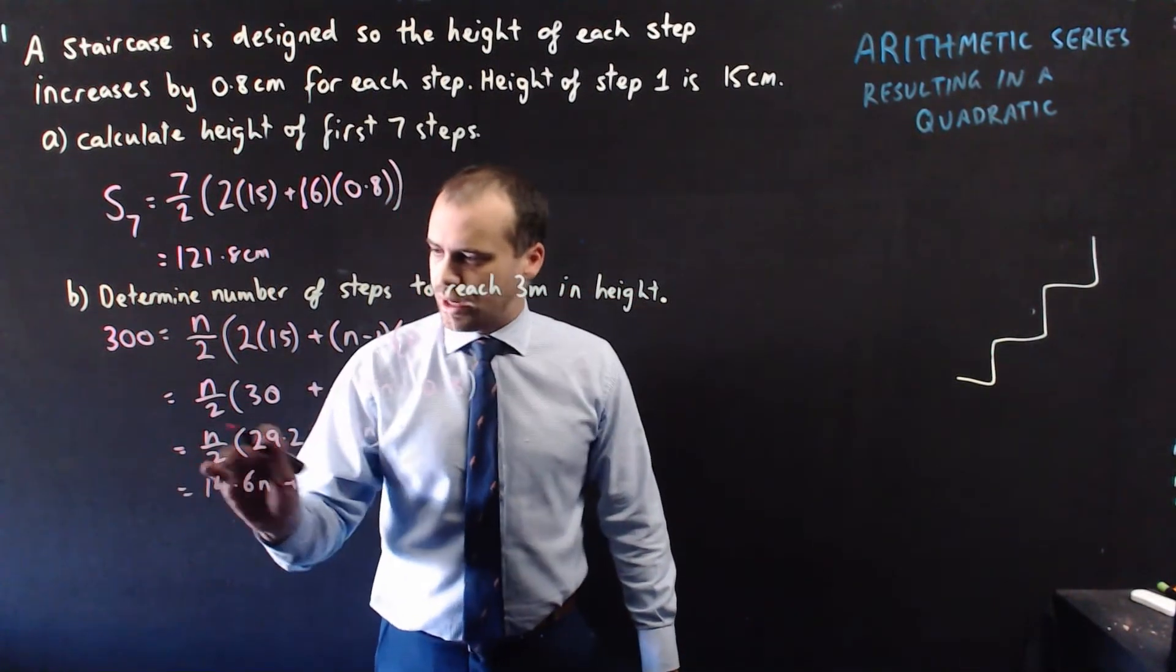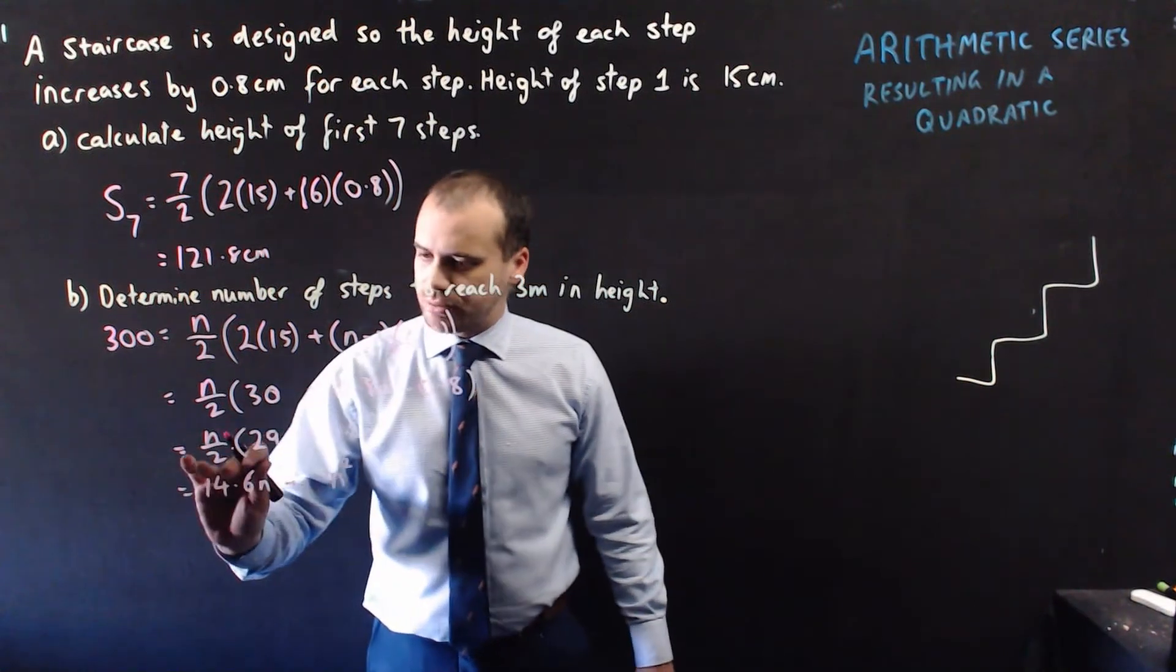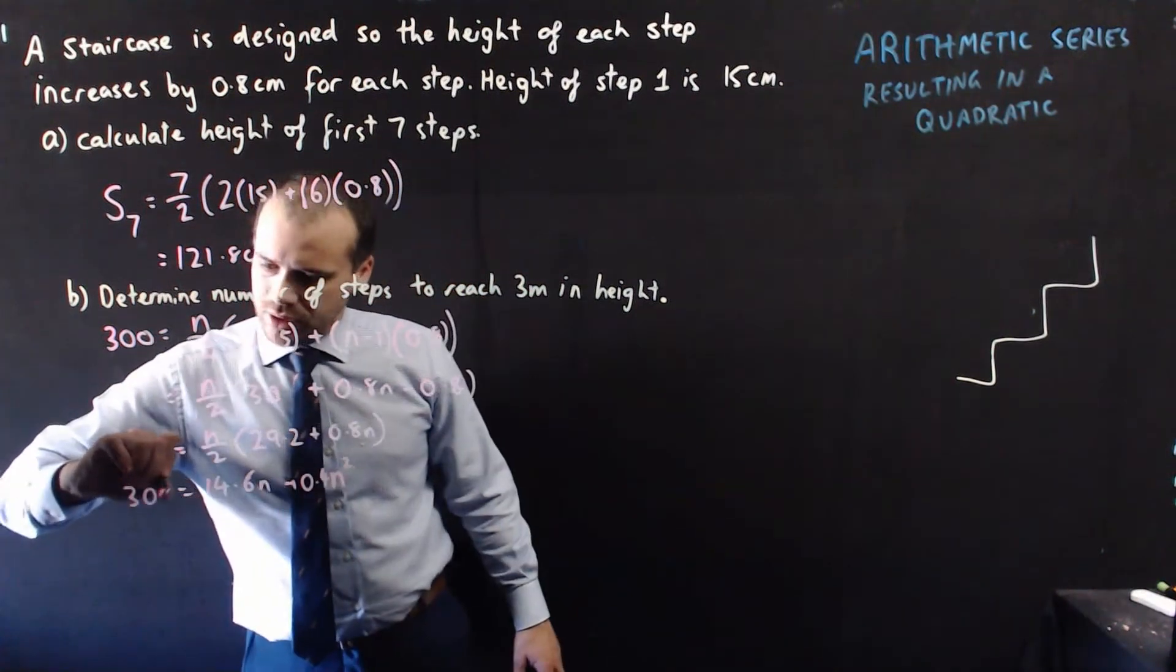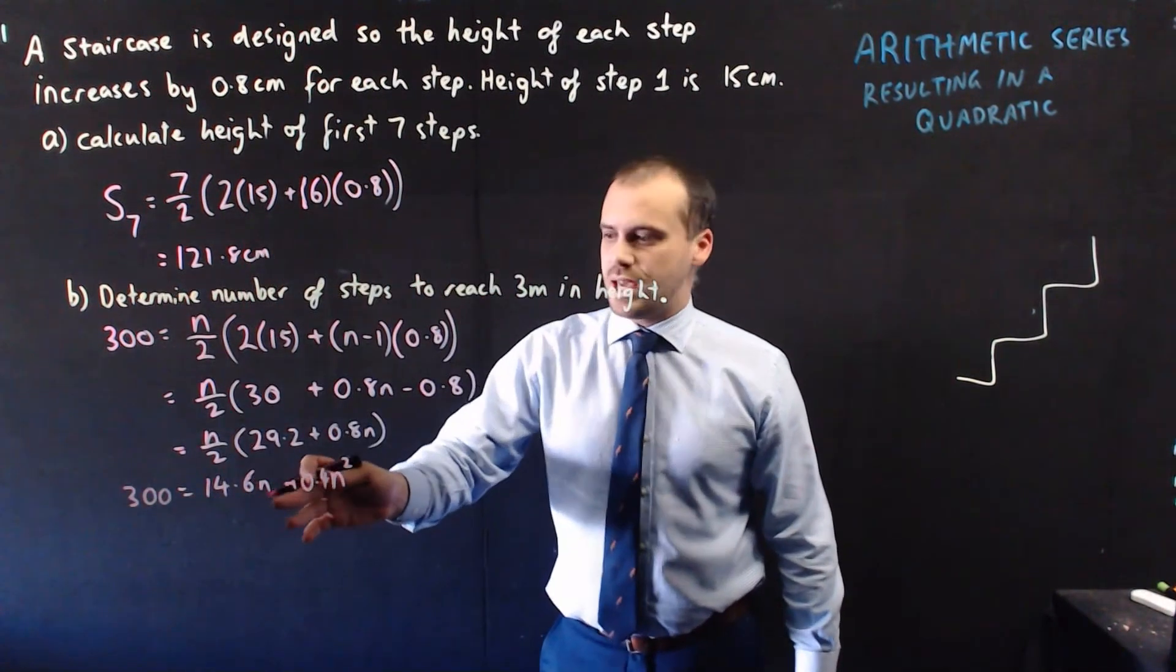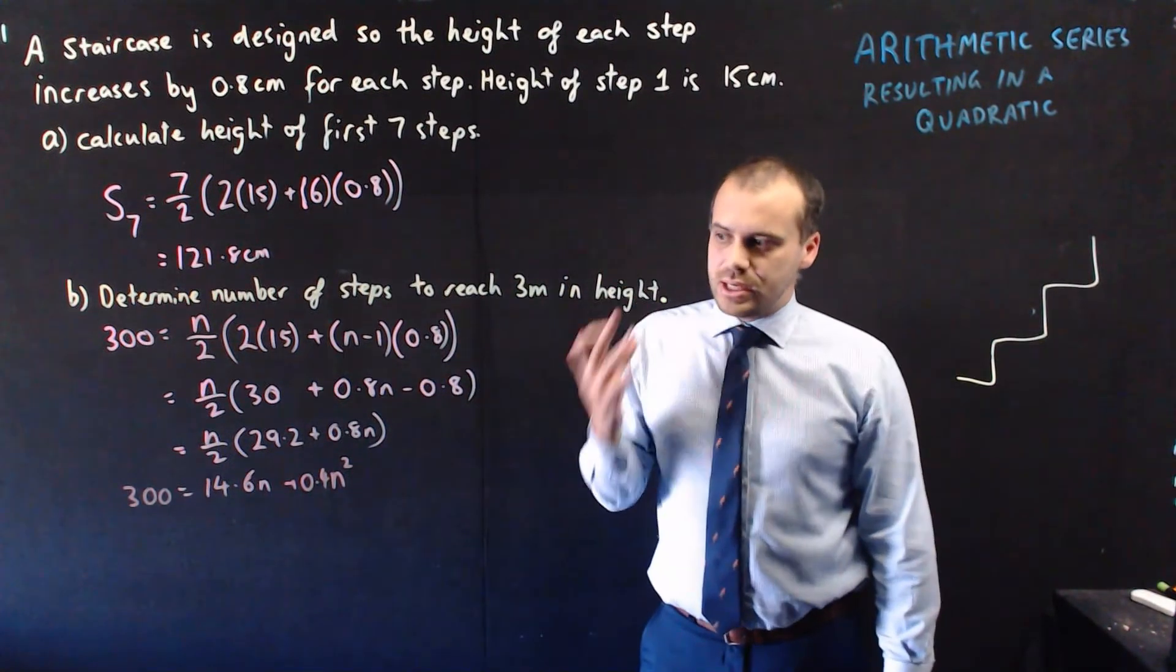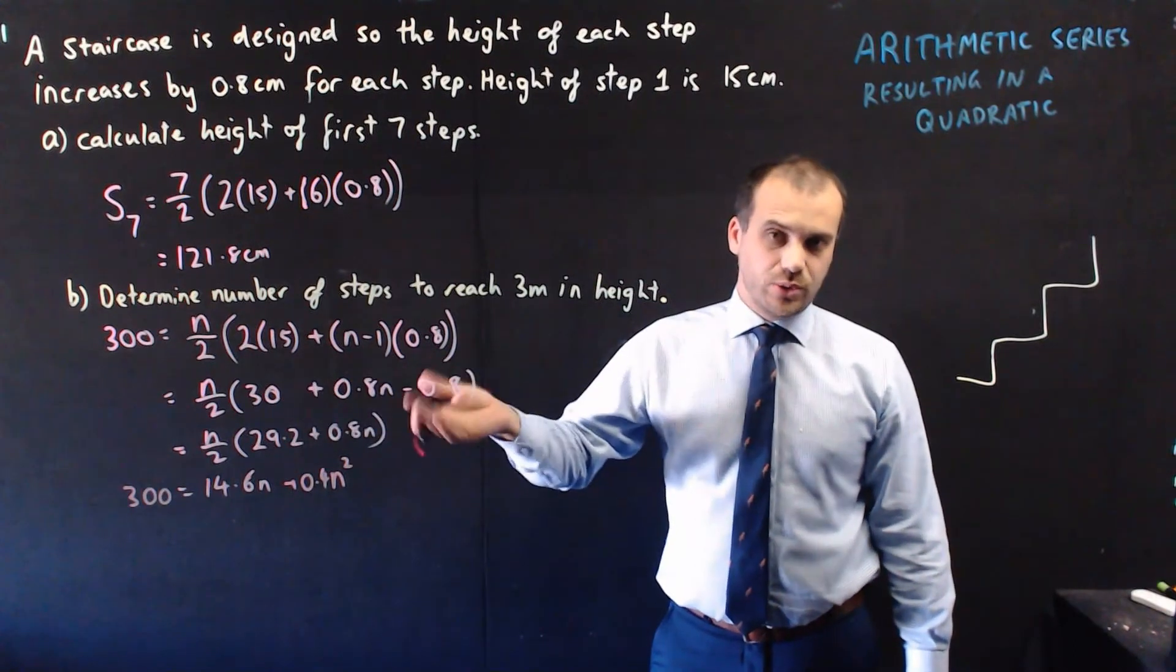And then this next one here, n times n will be n squared, and 0.8 divided by 2 is 0.4, and now I have 300 equals 14.6n, plus 0.4n squared. Now, we need to know what n is, that's a quadratic, so we need to solve that quadratic somehow.